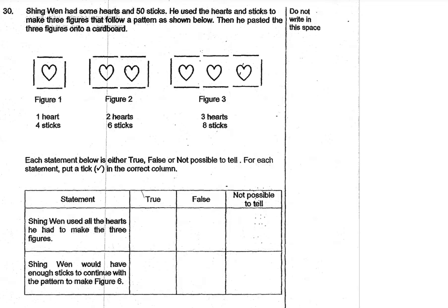In figure 1 there is 1 heart and 4 sticks surrounding it. Figure 2 has 2 hearts and 6 sticks. Figure 3 has 3 hearts and 8 sticks. Using this information, we are supposed to identify if the statements provided are true, false, or not possible to tell.